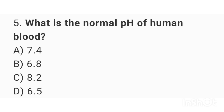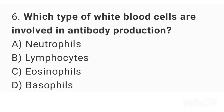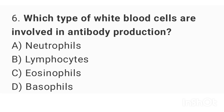Question number 5: What is the normal pH of human blood? The right answer is option A: 7.4. Question number 6: Which type of white blood cells are involved in antibody production? The right answer is option B: lymphocytes.